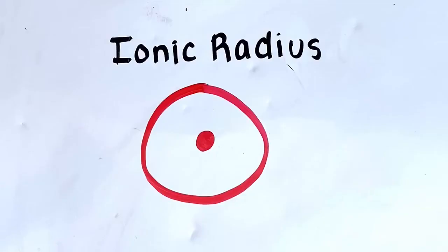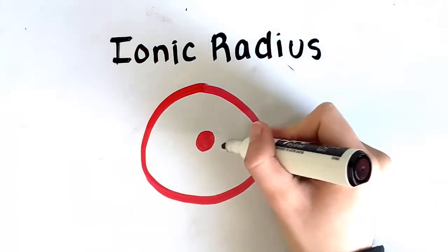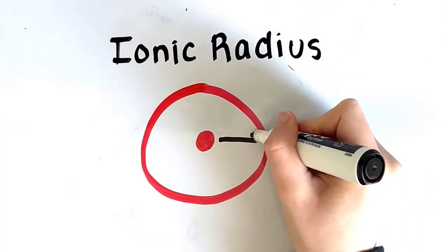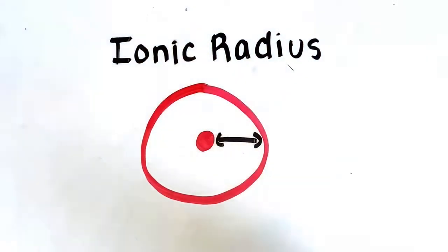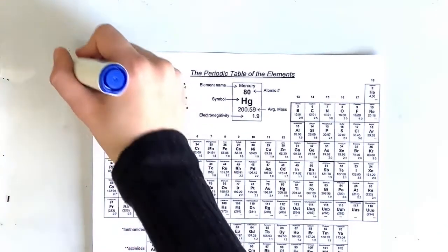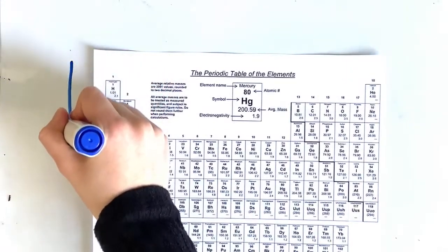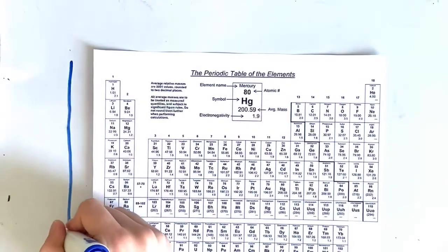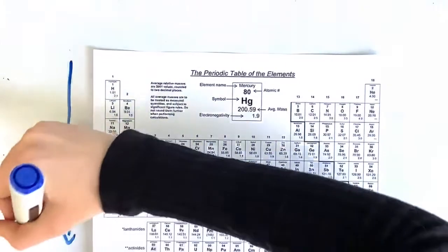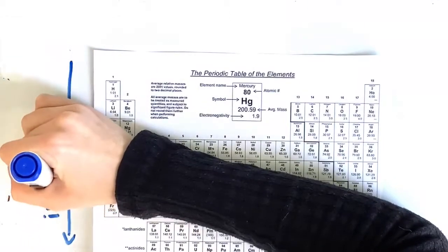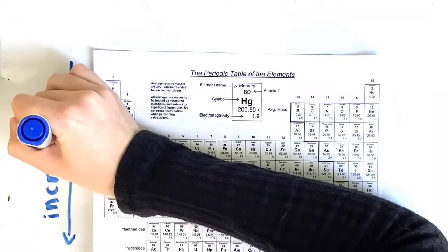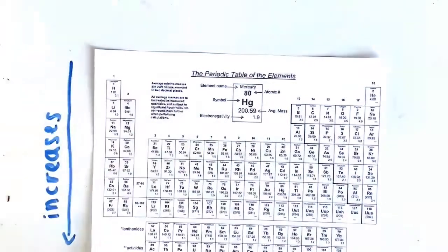Our third periodic table trend is the ionic radius. The ionic radius is the distance from the center of an ion to its valence shell. We know that metal cations tend to lose electrons to become stable, and nonmetal anions gain electrons to become stable. As you go down a group, the ionic radius increases. This is because the number of electron shells increases, which increases the shielding, meaning the electrons feel less of a pull to the nucleus, creating more space between the valence shell and the nucleus, therefore increasing the ionic radius.